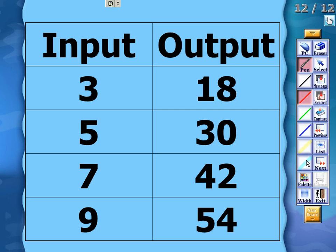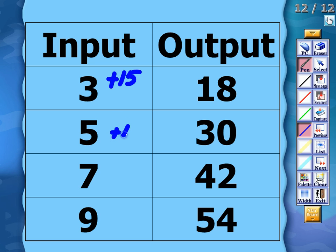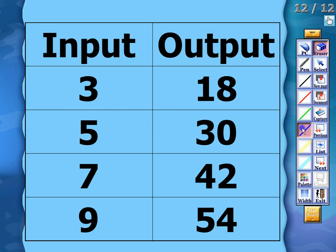We have 3 going to 18, 5 to 30, 7 to 42, 9 to 54 — each number is increasing, so we're working with multiplication or addition. From 3 to 18 is an increase of 15, so it could be add 15. Testing: that works for the first one, but 5 plus 15 gives me 20, not 30 — so add 15 doesn't work. Let's try multiplying: 3 times 6 gives me 18.